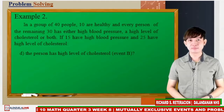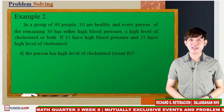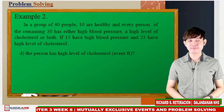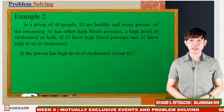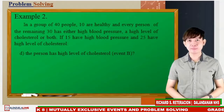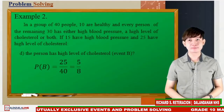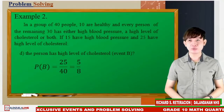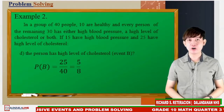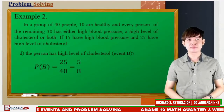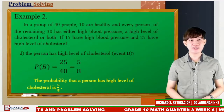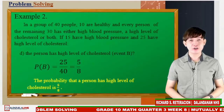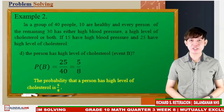Letter D: What is the probability that a person has a high level of cholesterol? Let us name it as event B. From the problem, 25 out of 40 people have a high level of cholesterol. Therefore, the probability of event B equals 25 over 40 or 5 eighths. Thus, the probability that a person has a high level of cholesterol is 5 eighths or 62.5%.